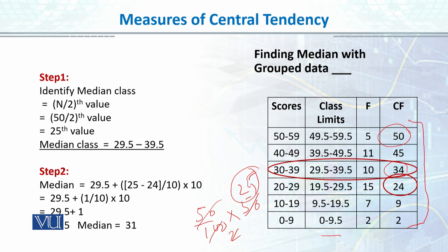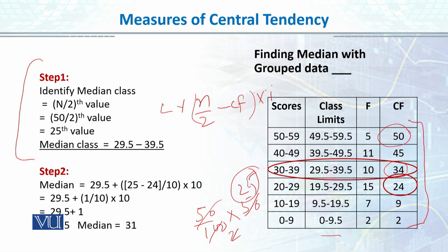Aap ne apni modal class identify karli — this is step one. Apne apna fiftieth percentile nikal ke modal class identify ki, aur uski real limits dekhi. Now you will plug in the values in the formula, which is: L plus (n/2 minus cf) divided by f, multiplied by class interval. Maine lower limit leke, n by two which is twenty-five, cumulative frequency below the modal class which is twenty-four, modal class ki frequency is ten, aur class interval bhi ten. I will plug in the values and calculate the median, which is thirty-one. So our fiftieth percentile, which is the median — the central value that divides the data into two equal parts — is thirty-one.